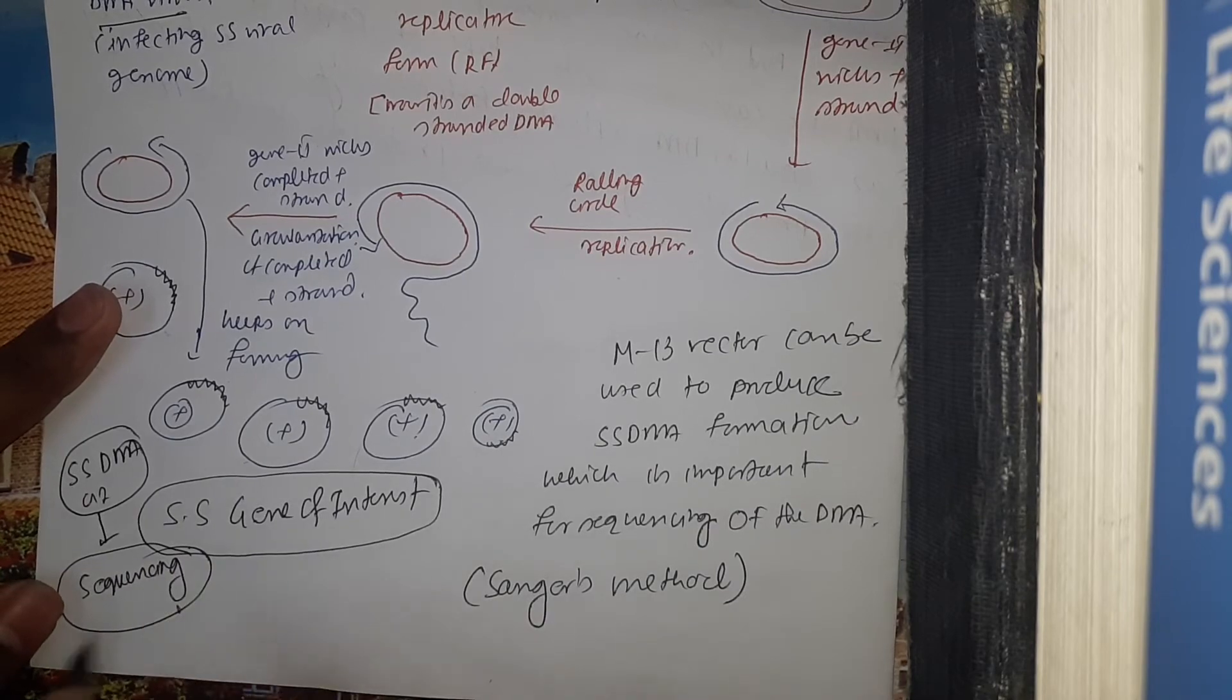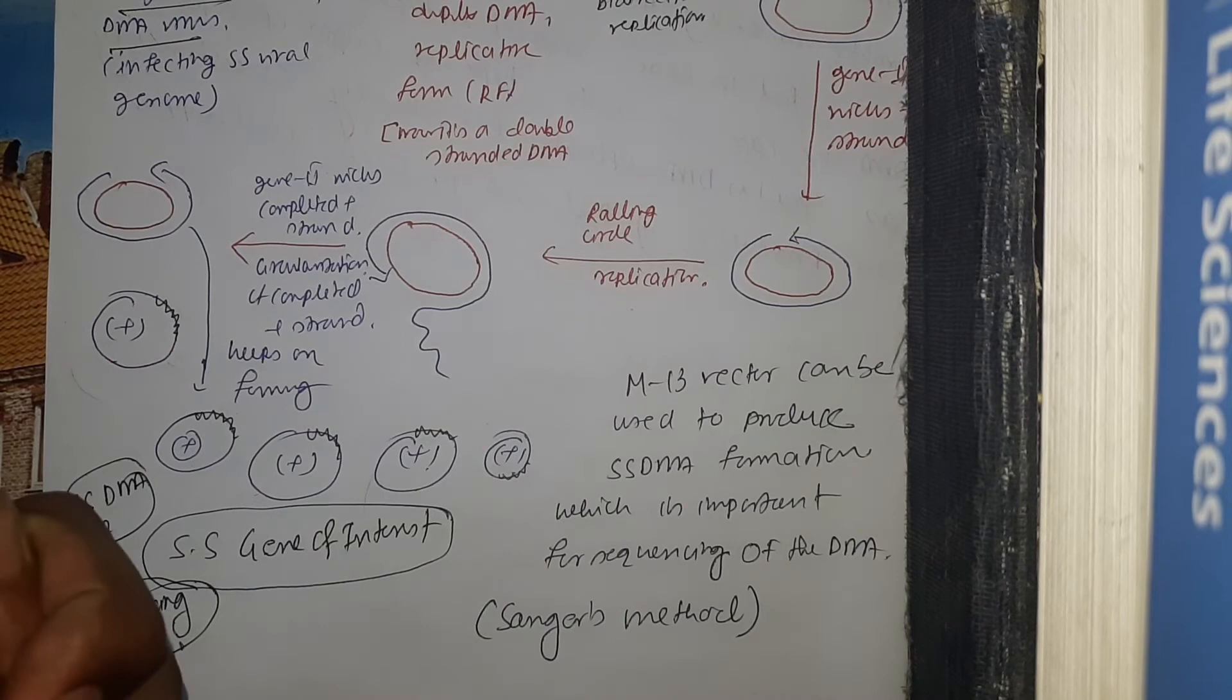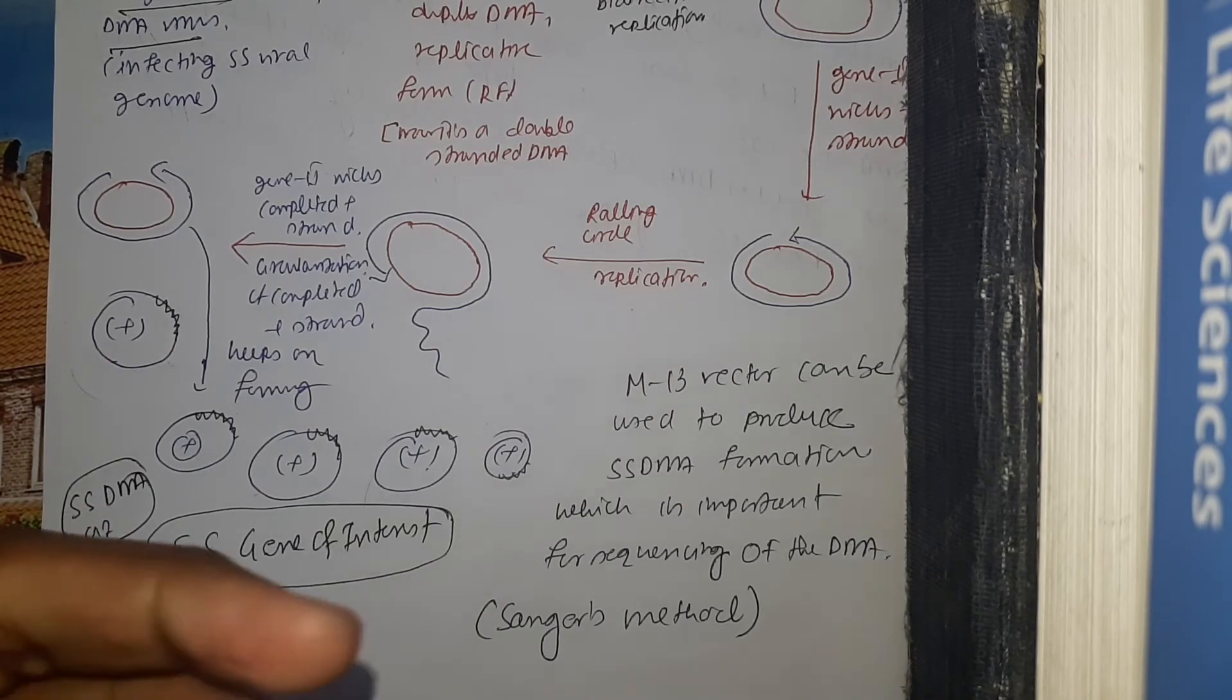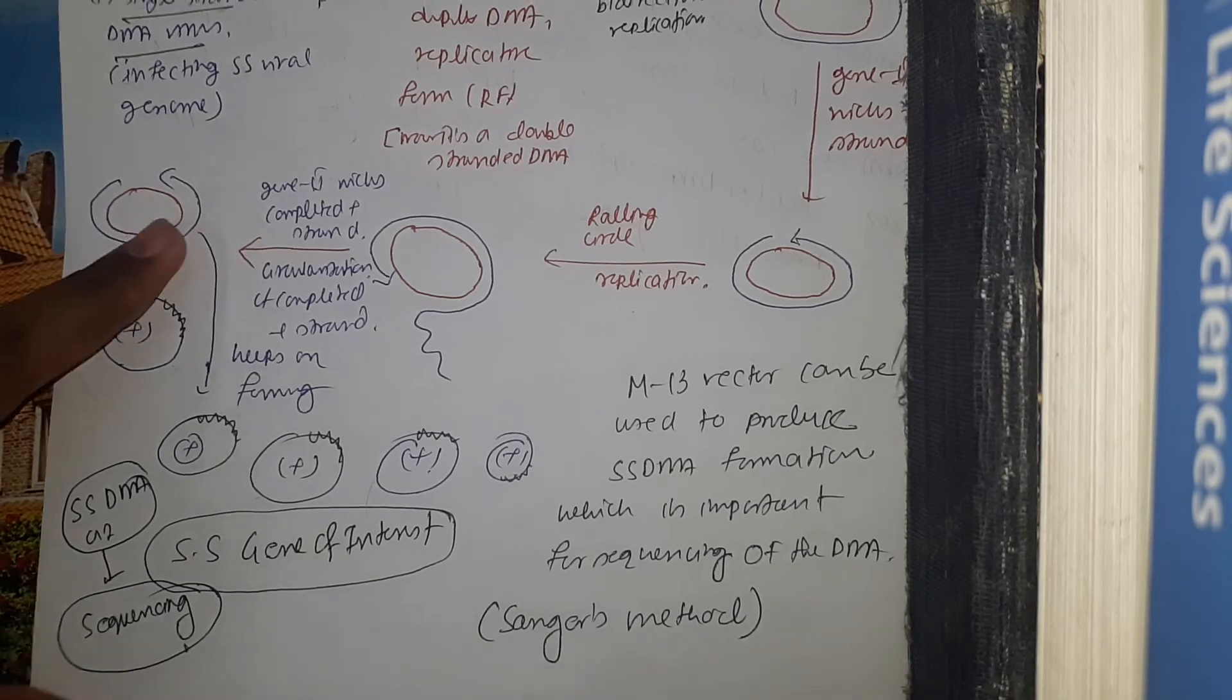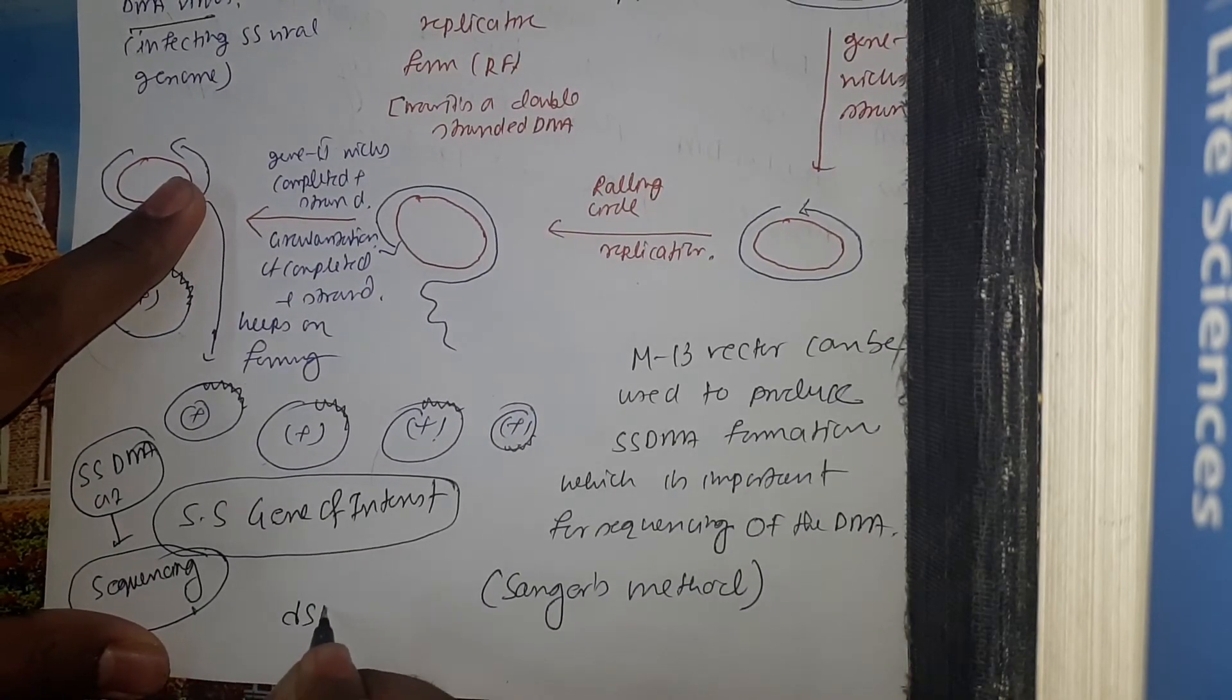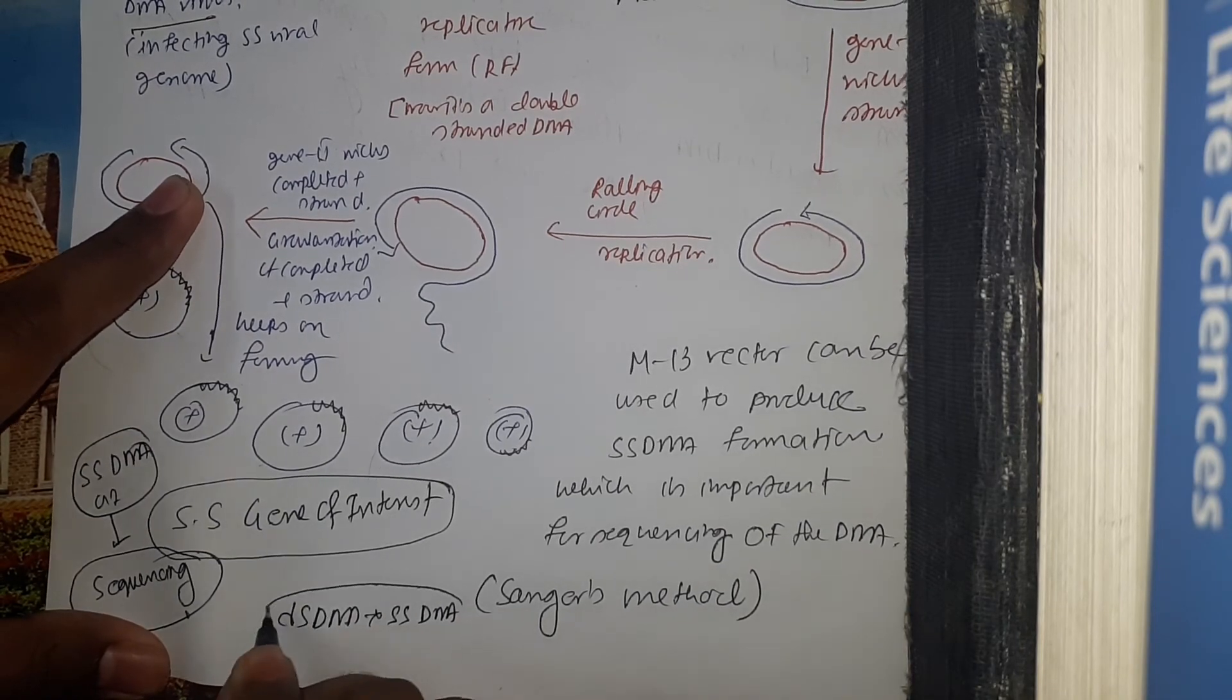We have two ways to produce single-stranded DNA for sequencing. One is by simply using alkylation treatment, or you can say denaturation treatment, to convert a double-stranded DNA to a single-stranded one, but it is quite risky.